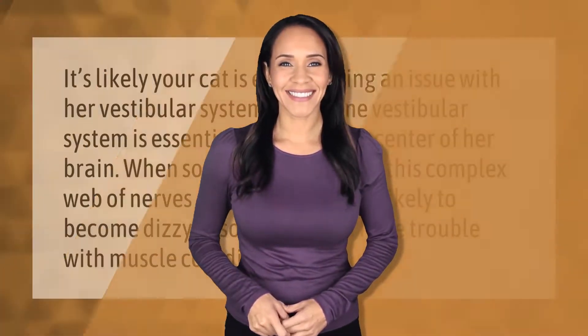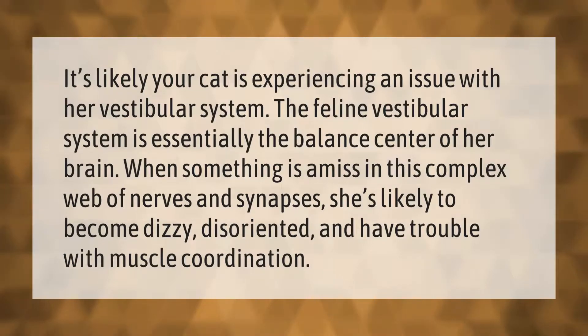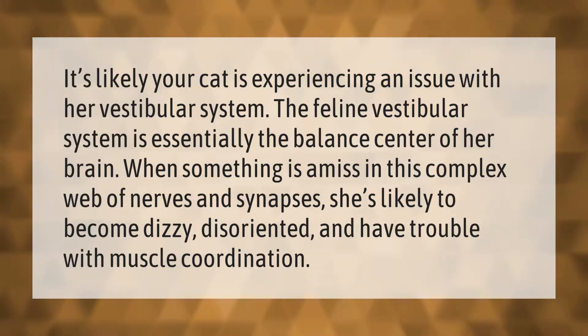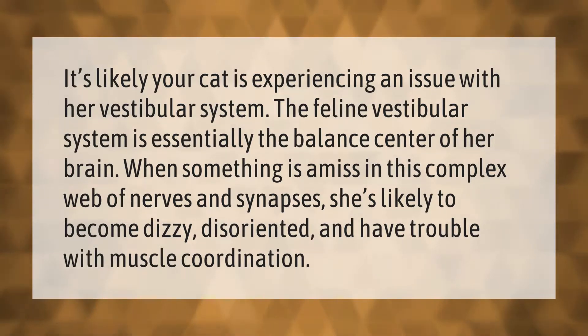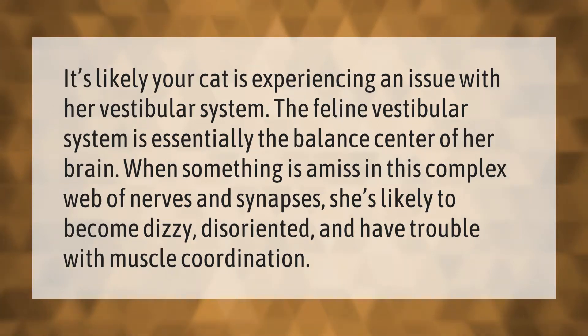It's likely your cat is experiencing an issue with her vestibular system. The feline vestibular system is essentially the balance center of her brain. When something is amiss in this complex web of nerves and synapses, she's likely to become dizzy, disoriented, and have trouble with muscle coordination.